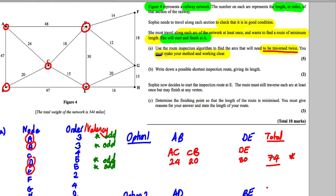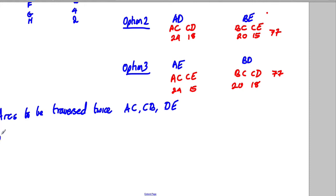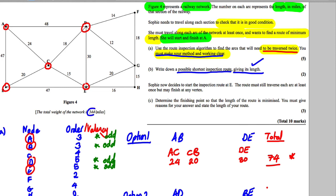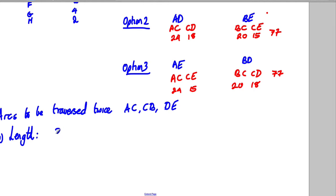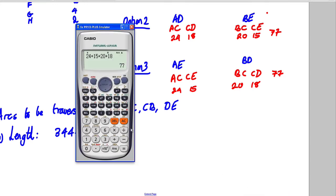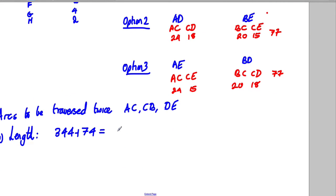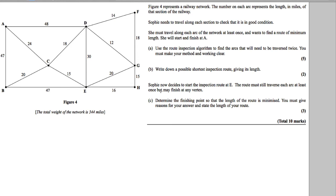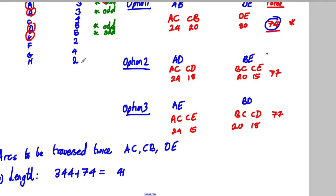For Part B, we must write down the shortest possible inspection route and state its length. The length is the easy mark to get first. The total length of the network is 344 miles; we add 74 for the repeated arcs. So 344 + 74 = 418 miles.